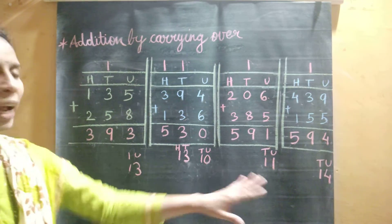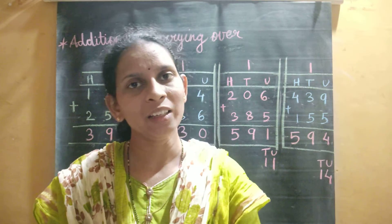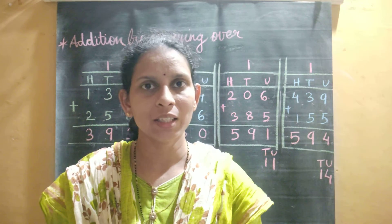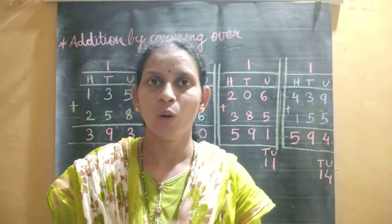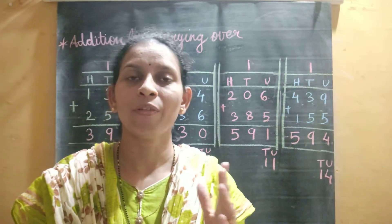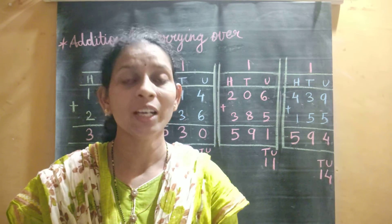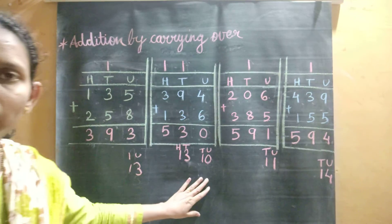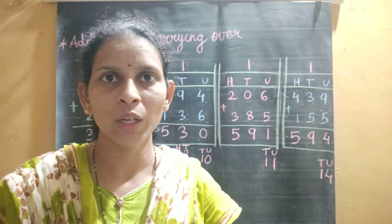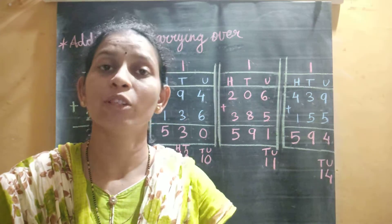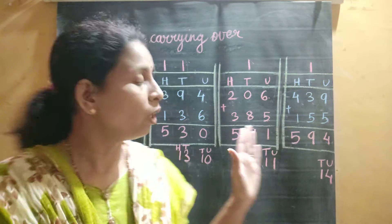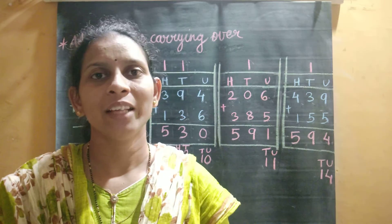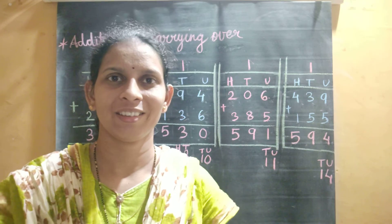So students, in this way we solve addition by carrying over. When you get a 2-digit number, write one digit down in the answer and carry over the other digit. Today's homework is to write down these 4 examples in your notebook and solve them yourself — first practice, then solve them. Thank you students. In the next video we will see some more examples. Thank you.